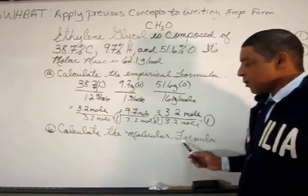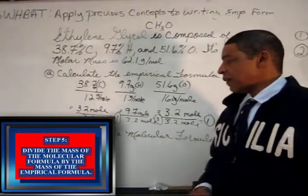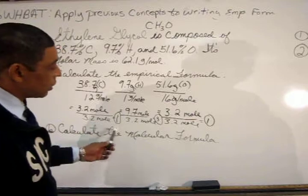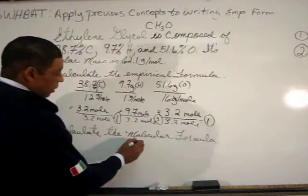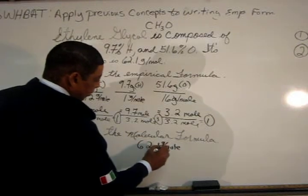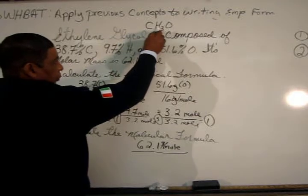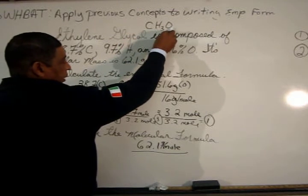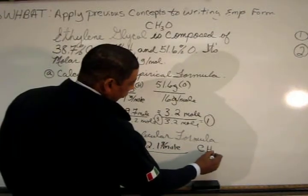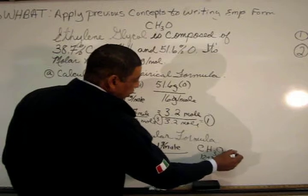To determine the molecular formula of the compound, simply use the information provided in the practice problem, where we are told that the molar mass of the molecular compound is 62.1 grams per mole. To determine the molecular formula, divide 62.1 g/mol by the mass of the empirical formula. The mass of CH₃O is 12 plus 3 plus 16, which equals 31 grams per mole.